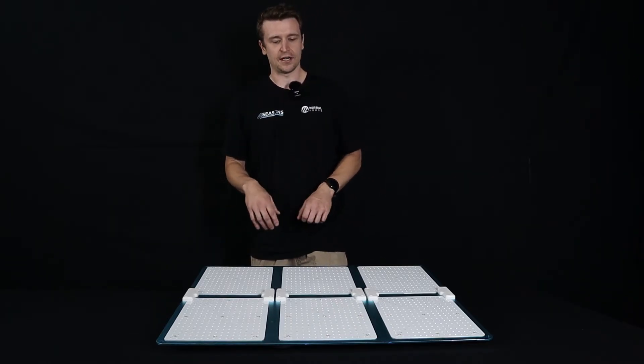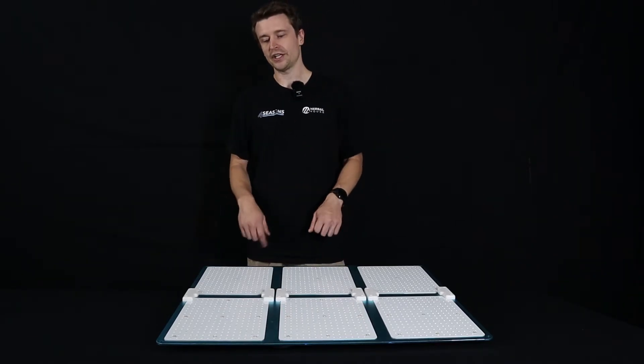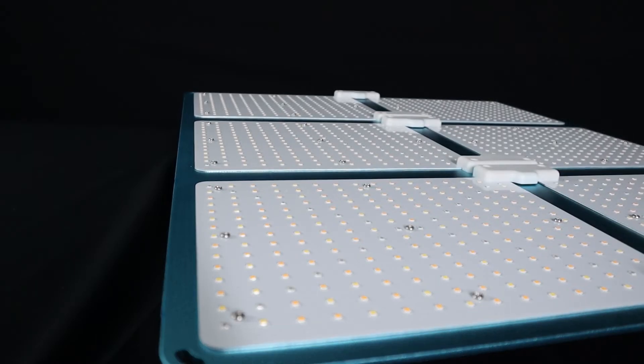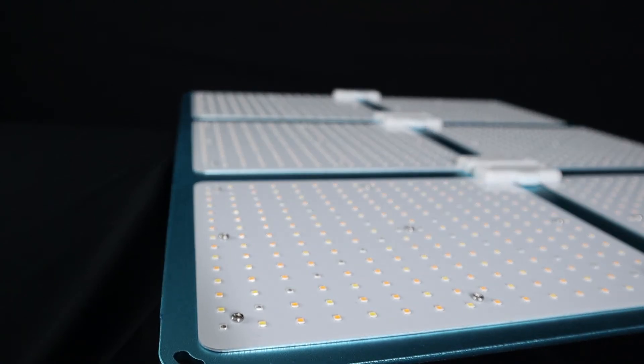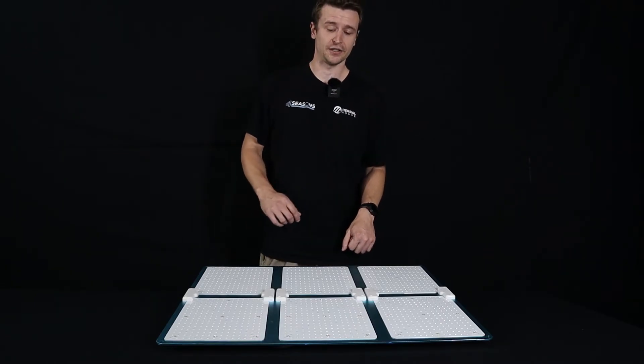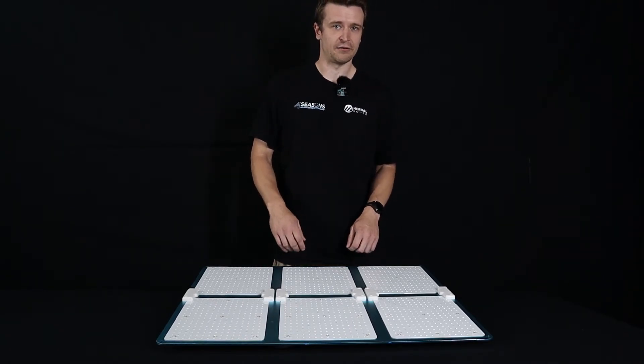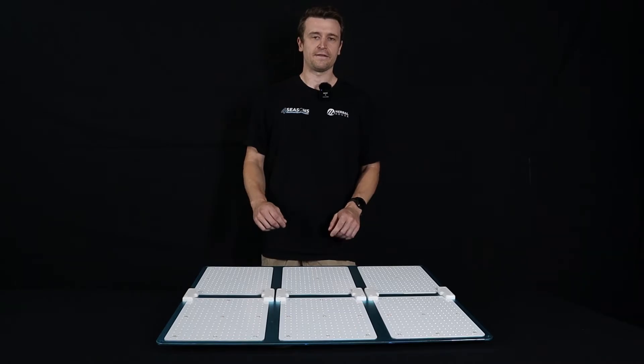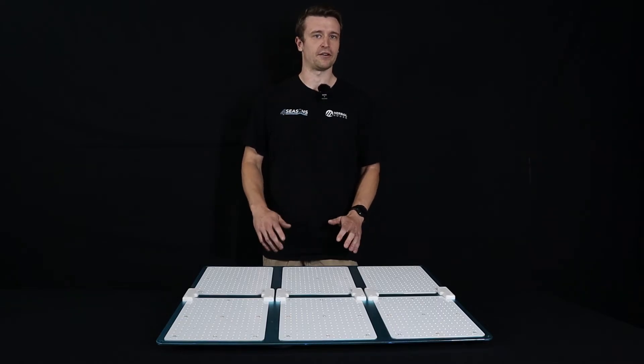Moving on to the diodes themselves they have the Samsung LM301B in 3000k and 5000k CCT so that's the colour temperature. The idea being that one is more of a flowering spectrum and one is more of a veg spectrum. When you combine both of those together you're getting the best of both worlds and you're ending up with a 3500k average. That is right where we like to see it. That's not the only spectrum used across this panel. They have supplemented Osram 660 reds to enhance the bloom effect and they've added three percent of 730 which is your far red to stimulate the Emerson effect which helps with the flowering result.